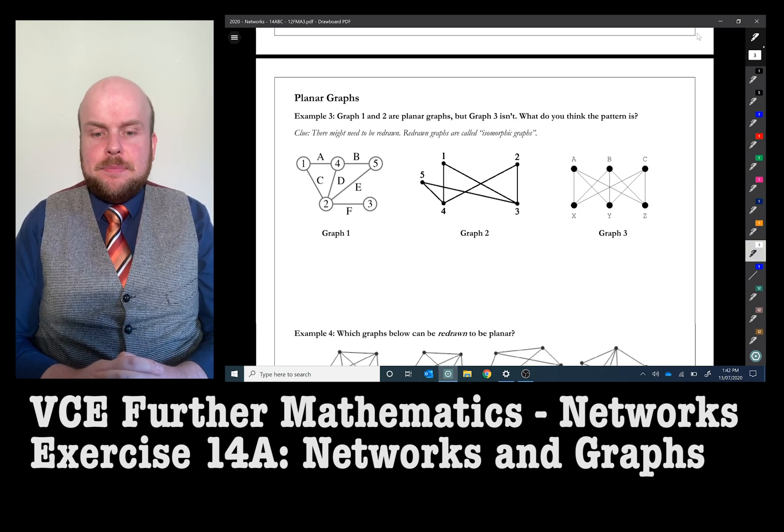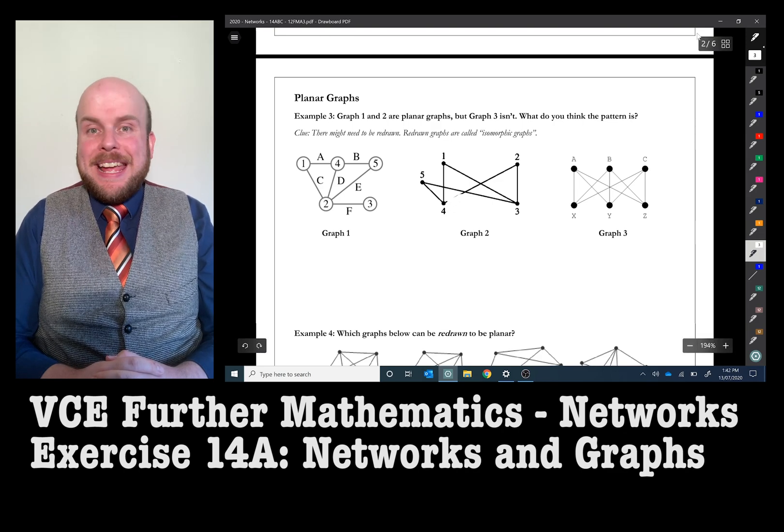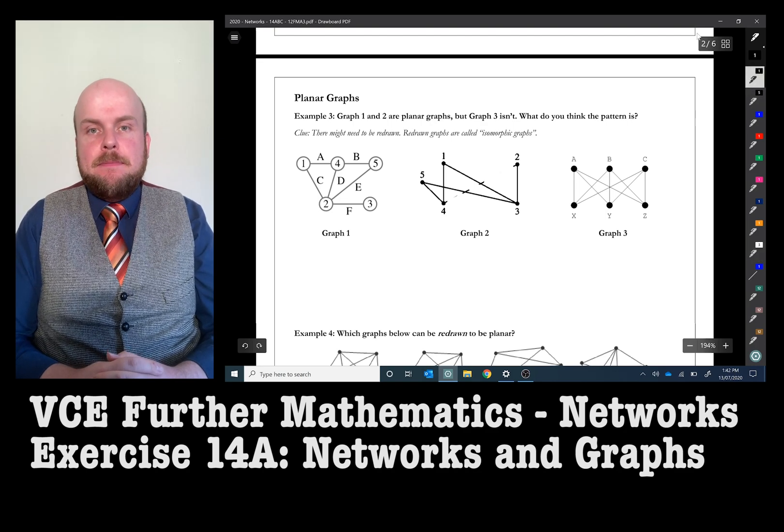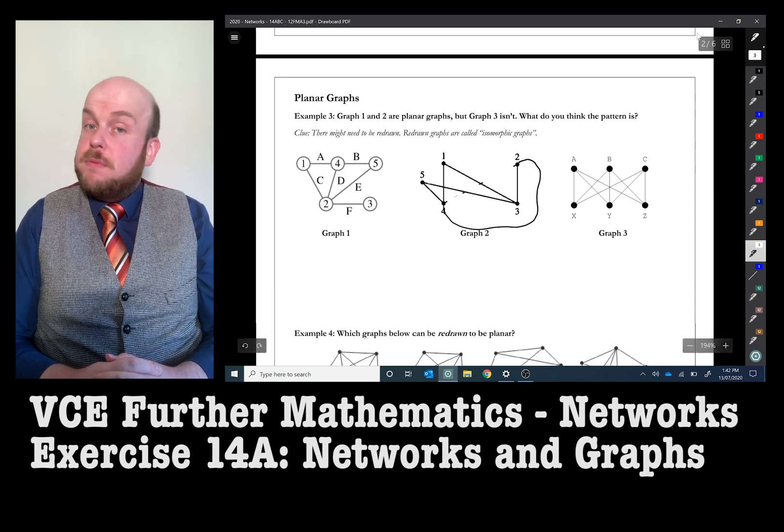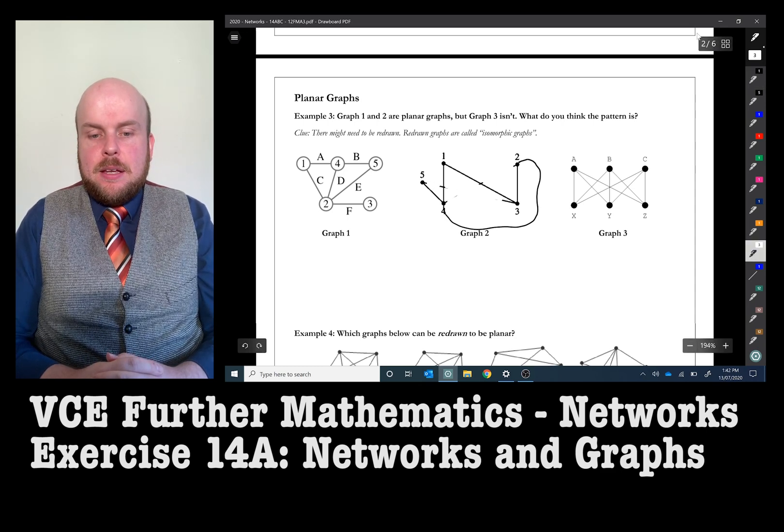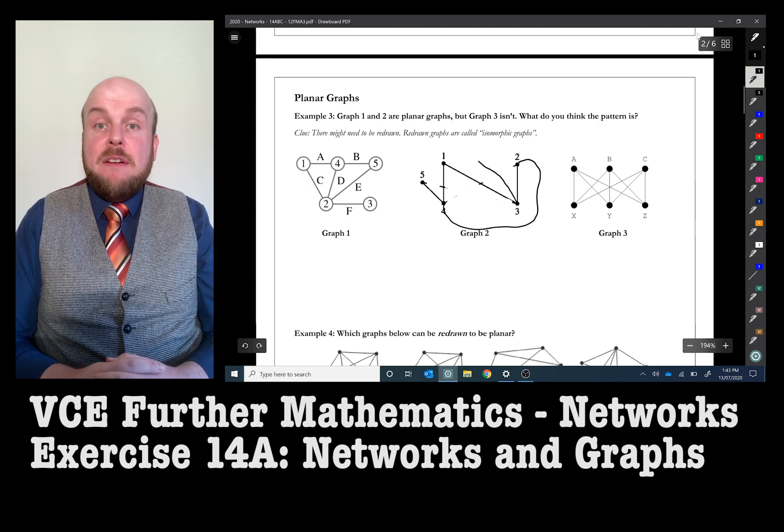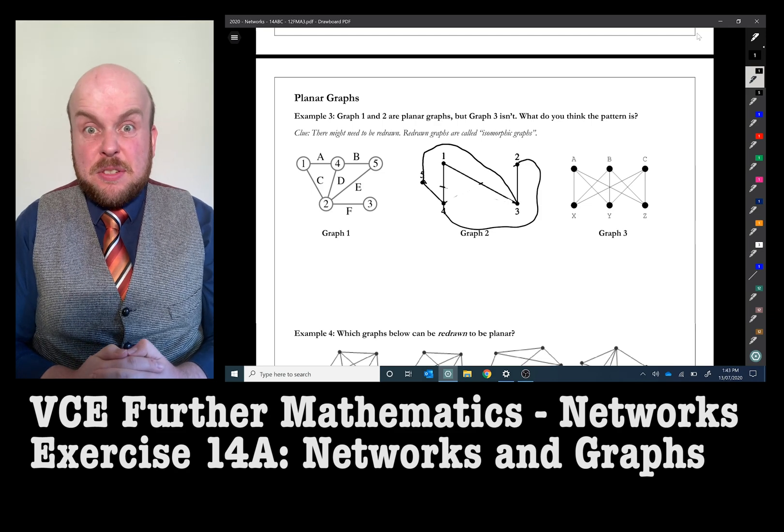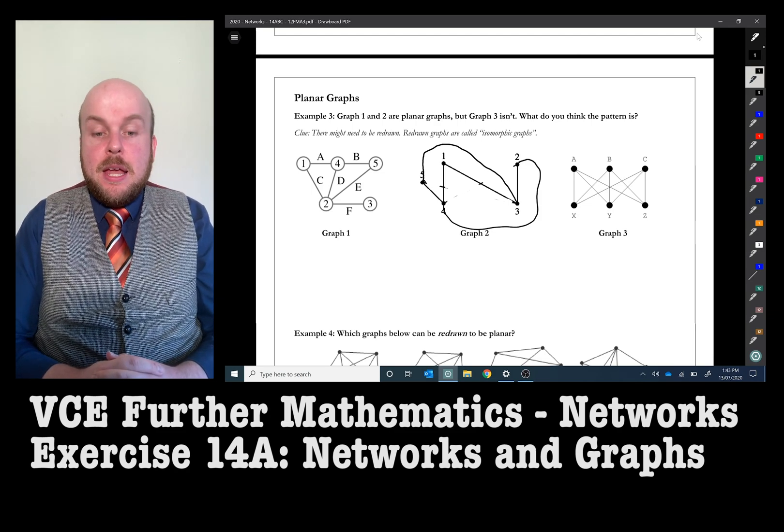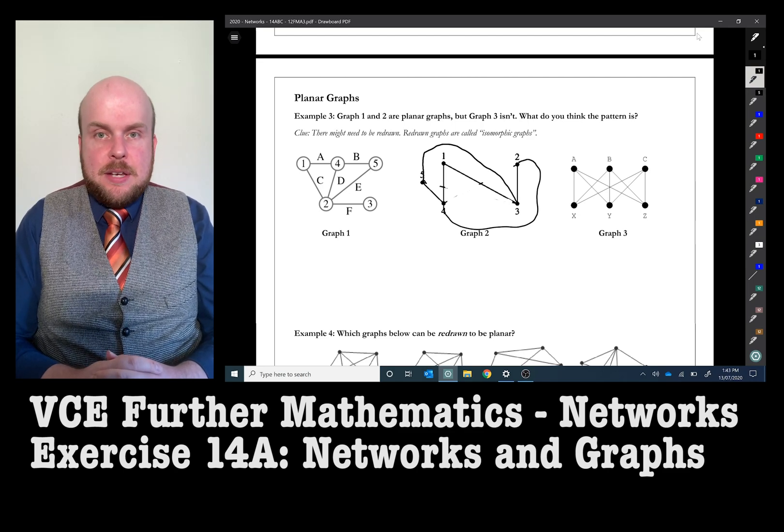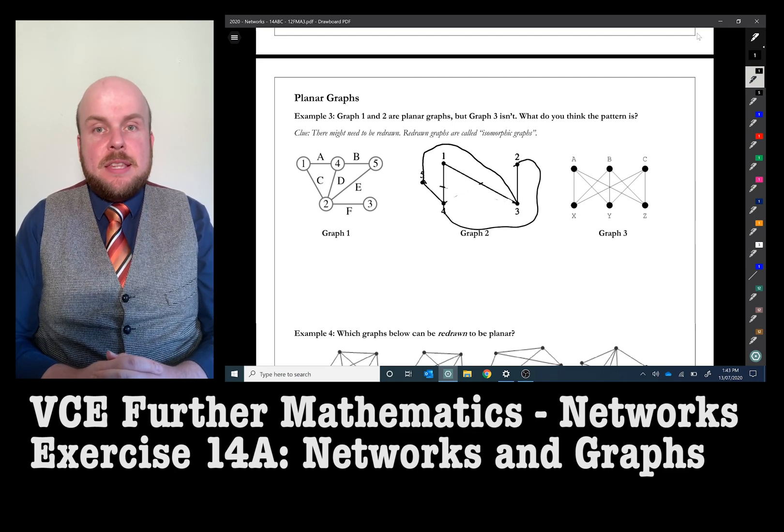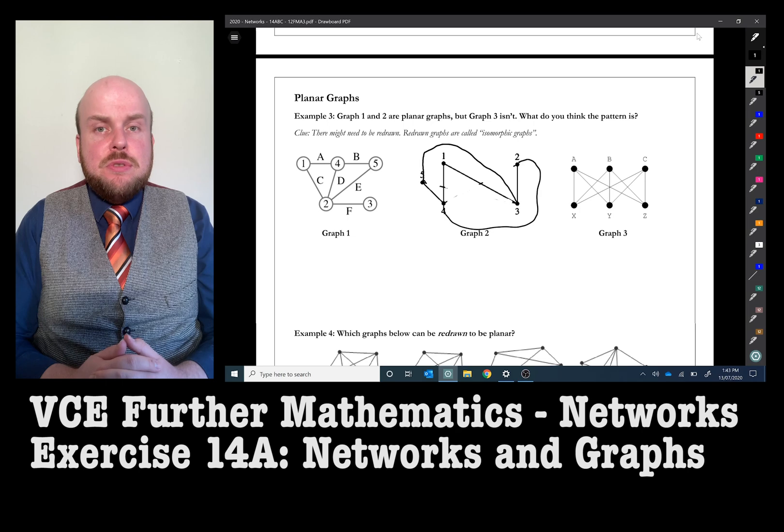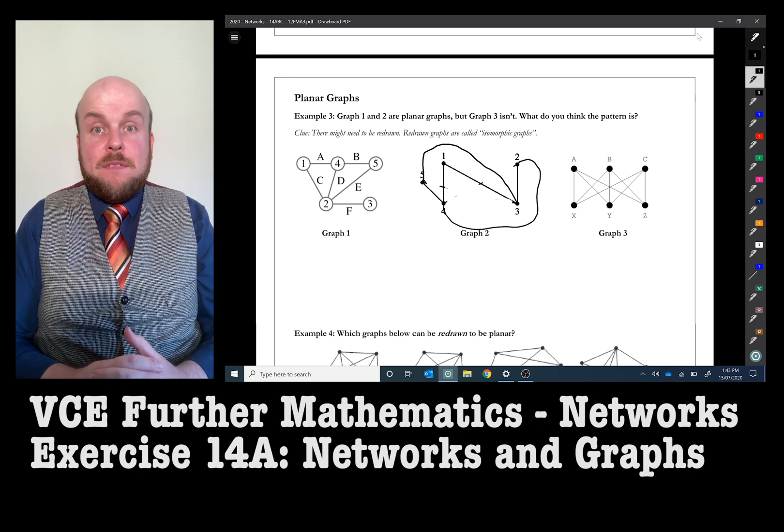You could do this either by eliminating an edge and redrawing it or simply by moving a vertex. I have chosen to redraw an edge. The edges you can consider to be flexible. They don't have to be straight lines. They look nice if they're straight lines, but they don't have to be straight lines. Therefore, I have chosen to erase edges and redraw them such that there are no overlapping lines. Unfortunately, no matter how hard you try, you cannot do this with graph three. There are just too many overlaps.